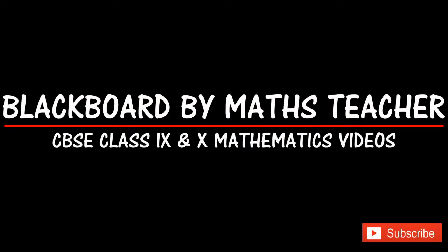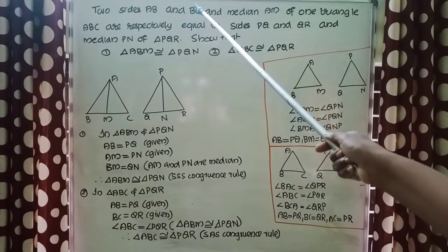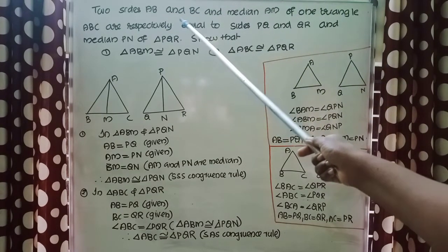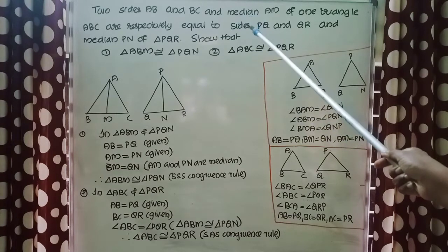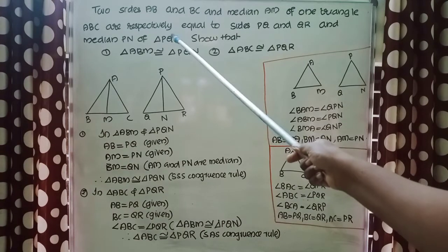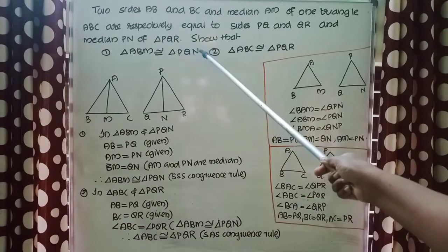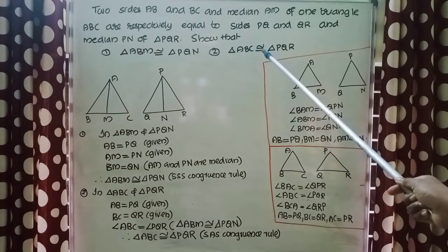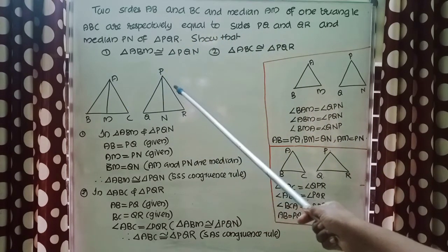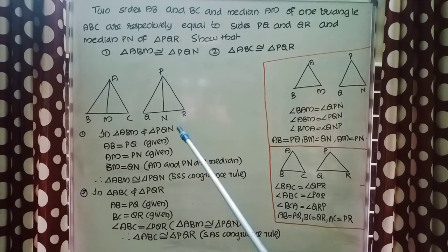Welcome to Blackboard. Two sides AB and BC and median AM of triangle ABC are respectively equal to sides PQ and QR and median PN of triangle PQR. Prove that triangle ABM is congruent to triangle PQN, and second, triangle ABC is congruent to triangle PQR. From the given figure, AM and PN are the medians. What is a median?